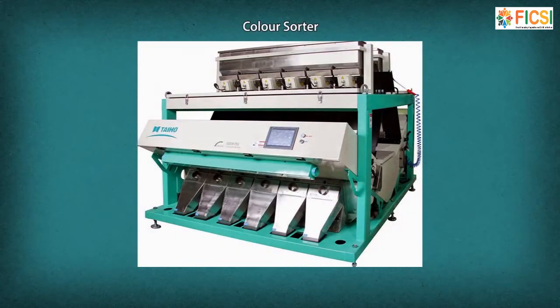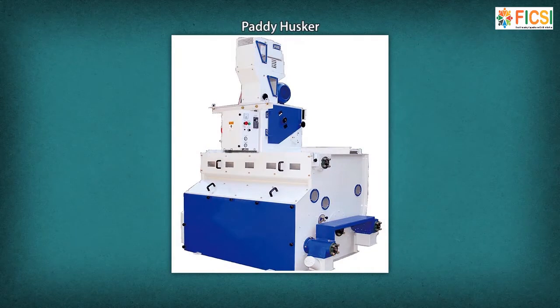Color Sorter: The Color Sorter is used for optical sorting of food products. Paddy Husker: The Husker removes husk from the paddy. It includes a vibratory feeder, timing belt drive, new aspiration system and a built-in access platform for roll changing.